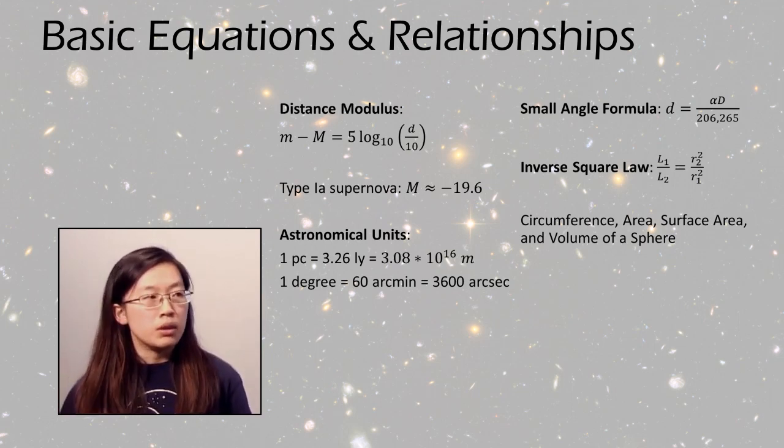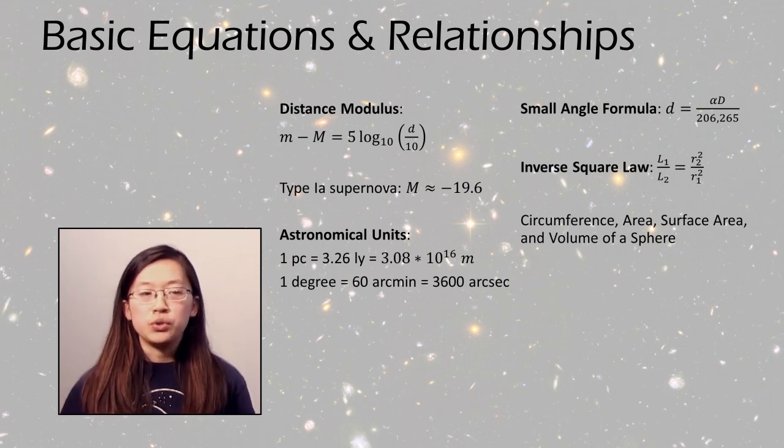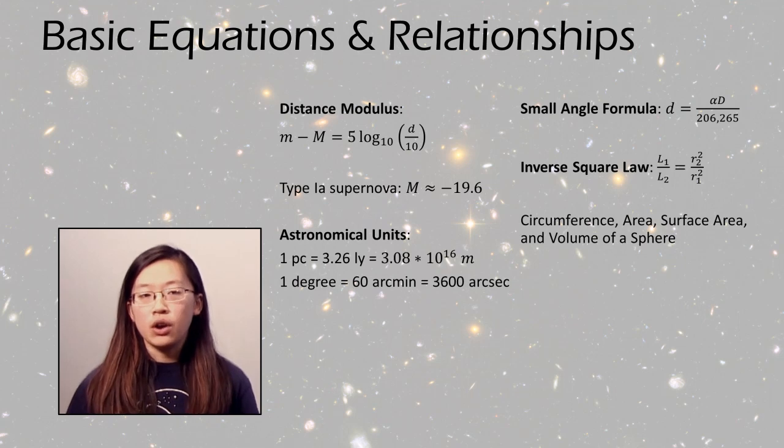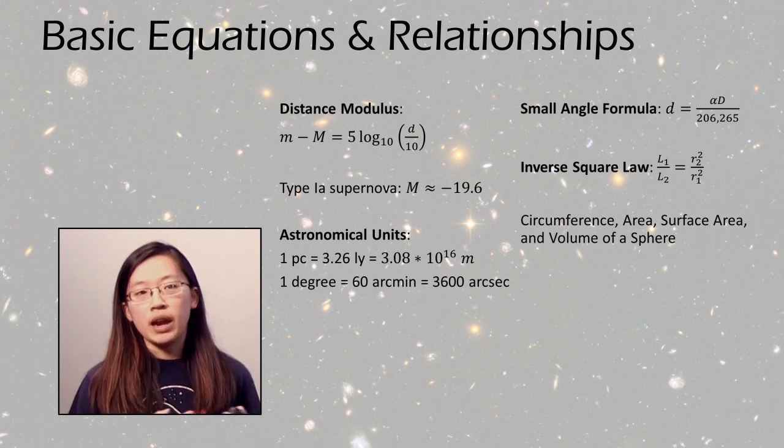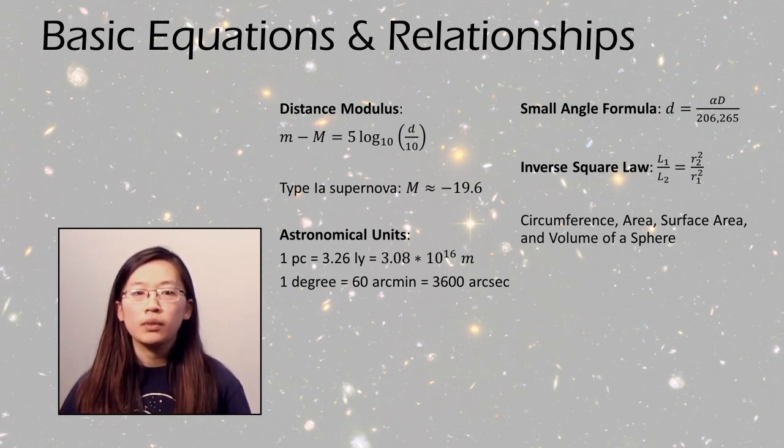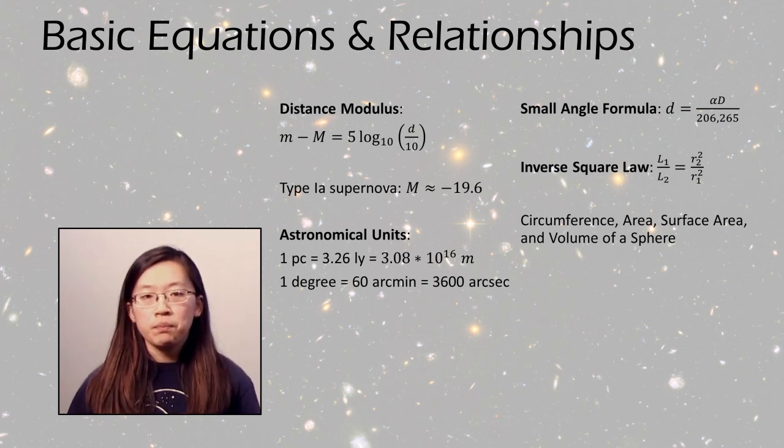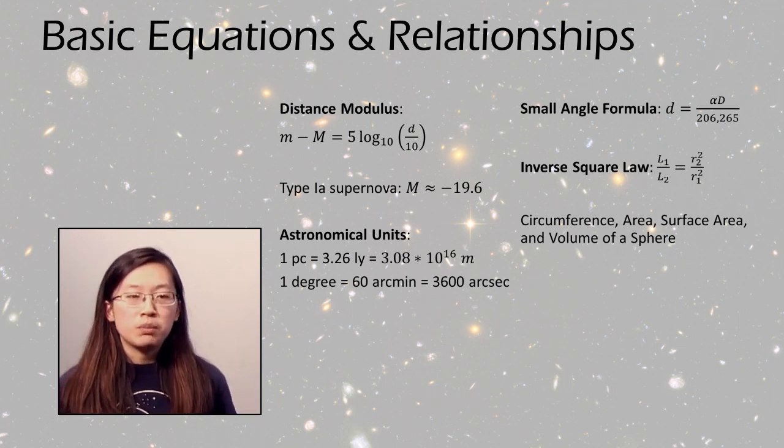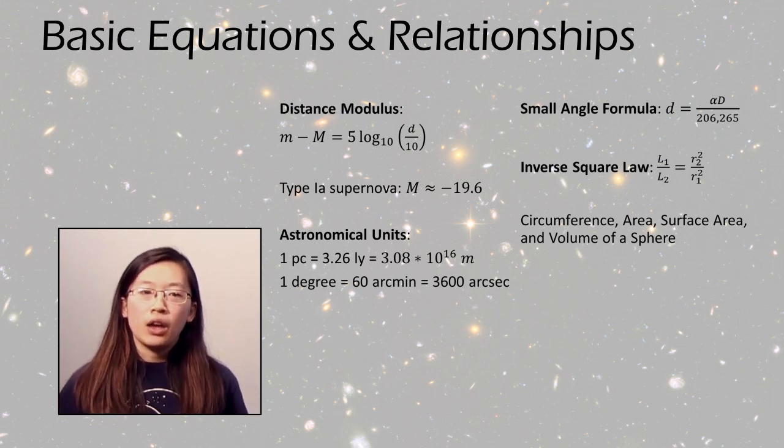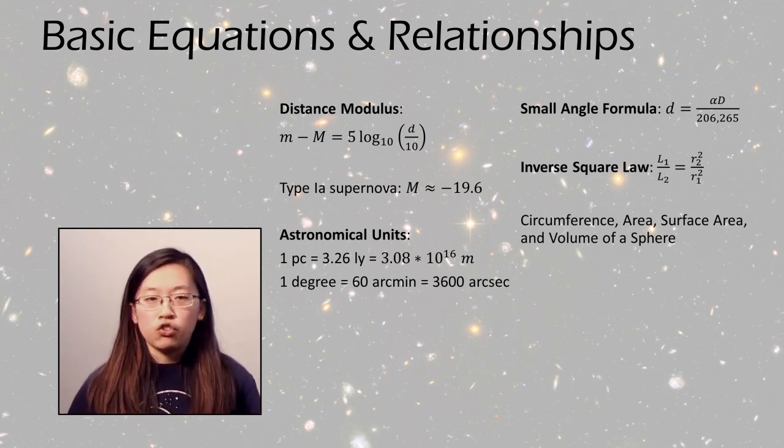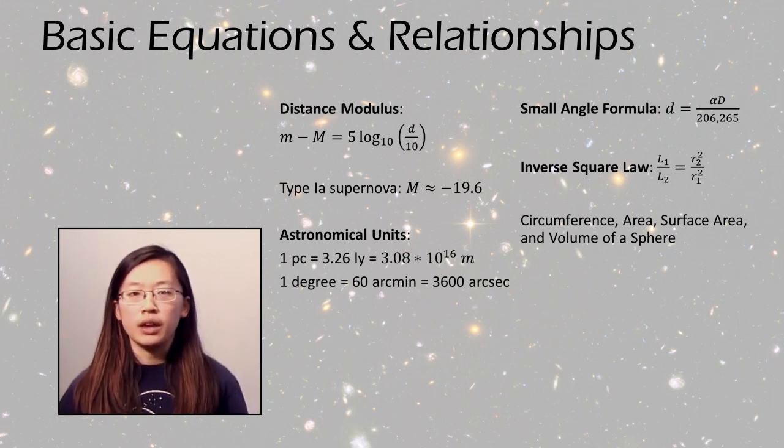So moving on to some of the basic math that you'll be required to know for astronomy, here are a couple of the basic equations. There's the distance modulus, which lets you determine the distance of an object based on its apparent and absolute magnitudes, or rather how bright it appears to be and how bright it's known to be. There's also the small angle formula and the inverse square law, as well as just knowing some things about the weird units that are used in astronomy, as well as things like basic geometry, the circumference area, volume of a sphere, things like that.